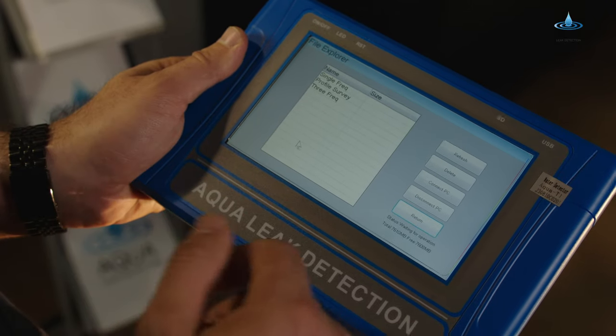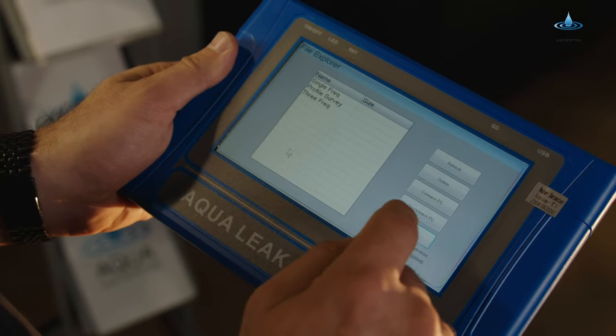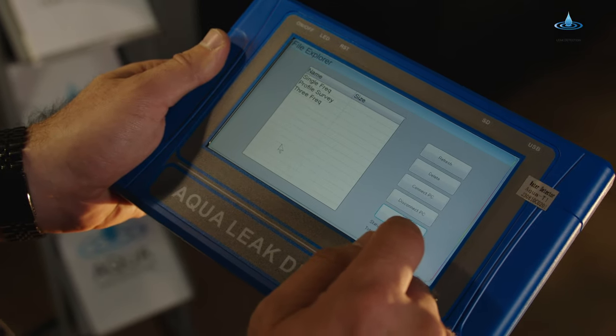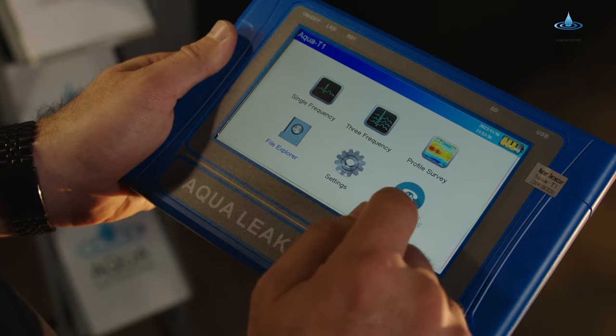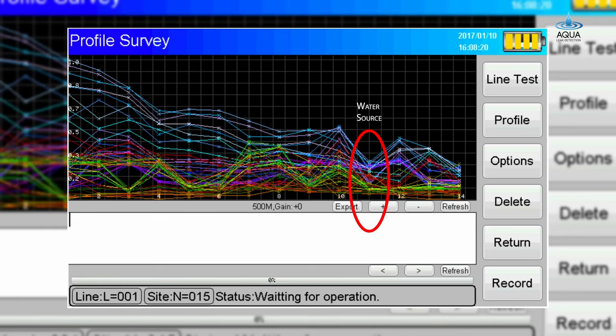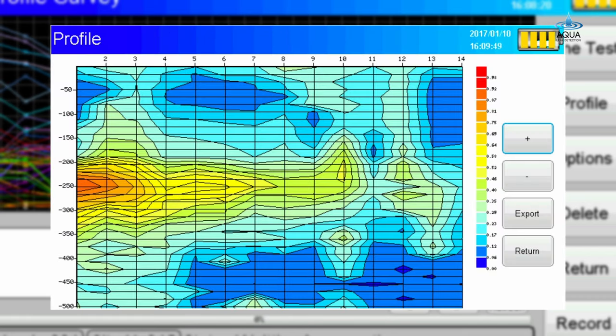You'll be able to go under the file explorer. We can find exported data. You connect to your PC, you'll be able to then export all that data onto a computer. And the profile survey, that is where you'll be able to see the graph from all the recorded data that you collect.